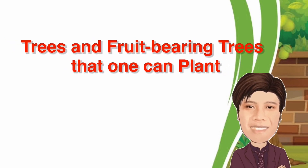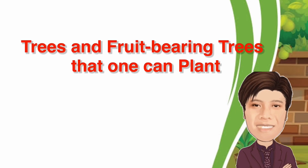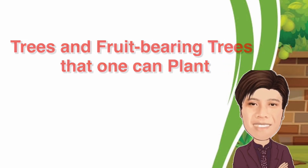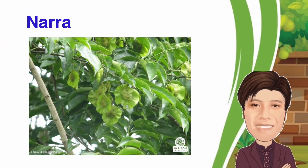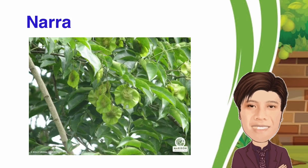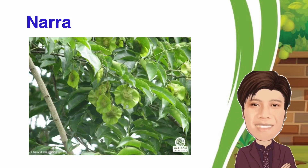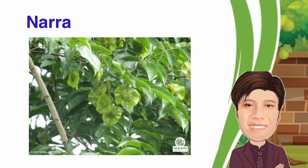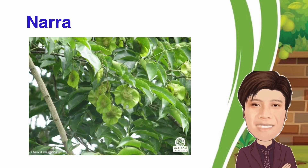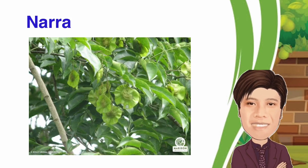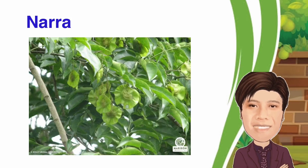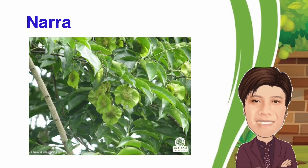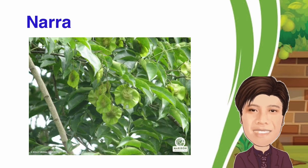Here are the trees and fruit-bearing trees that one can plant. Some of the common trees planted in both rural and urban areas are the following. Nara — it is a large deciduous tree, growing 30 to 40 meters tall, with a trunk up to 2 meters in diameter. The leaves are 12 to 22 cm long, pinnate, with 5 to 11 leaflets. The flowers are produced in panicles, 6 to 13 cm long, containing numerous flowers. Flowering is from February to May in the Philippines, and it is also known as the Philippine National Tree.